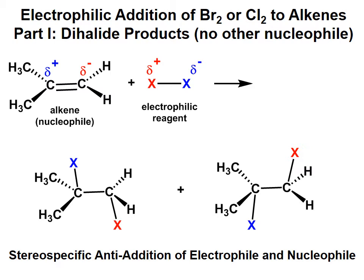Now, the way this alkene substrate is drawn, we are not getting any new chiral centers — but you certainly could. It's very likely you will see that type of problem. When you do generate two new chiral centers, instead of getting four stereoisomers, you're only going to get two, and they will always be a pair of enantiomers.